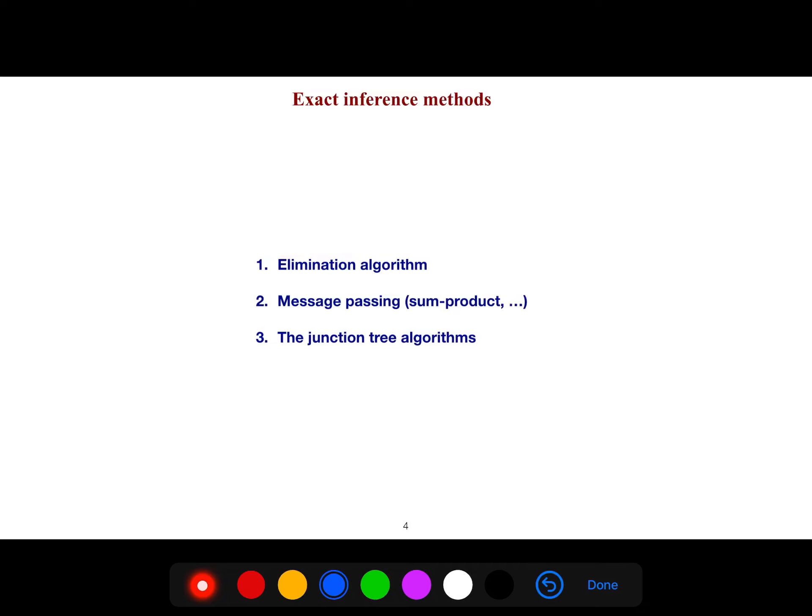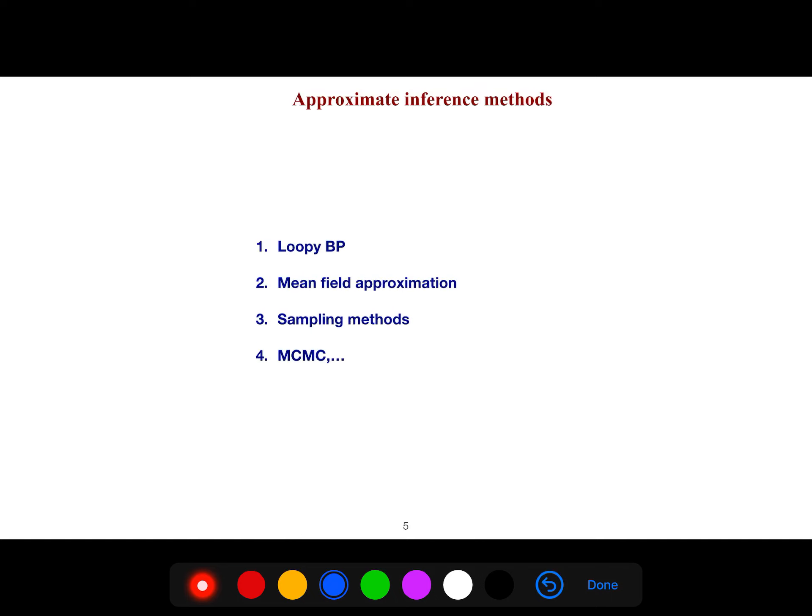For example if you have a loopy graph you go for junction tree. But whenever you have a loopy belief propagation your inference is approximate so there is no guarantee that it converges and so there are lots of challenges with loopy graphs, graphs that have loops.